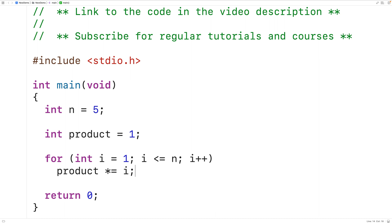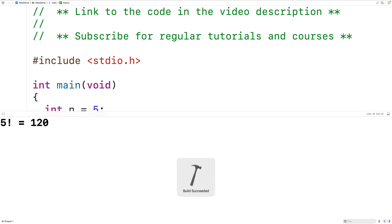So after the loop is done its work, we can output the factorial. We'll have here printf 5 factorial is equal to percent d backslash n, and we'll output the product. If we save, compile, and run our program, we get that 5 factorial is 120, which is correct.